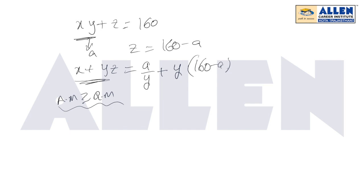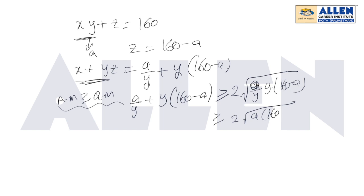It will give you a/y plus y times (160 minus a) is always greater than or equal to two times square root of a/y into y into (160 minus a). The y's cancel. That is greater than or equal to two root of a into (160 minus a). Now you see this.